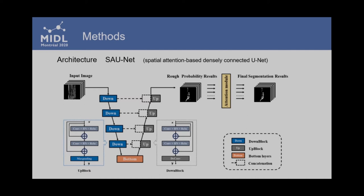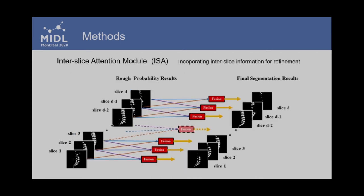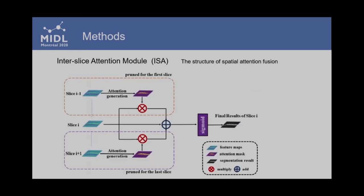After the 2D networks, we used an inter-slice attention module for the refinement of the segmentation results. For each slice, its adjacent slices are incorporated for the refinement, and the feature maps are utilized using 1x1 convolution and sigmoid to generate the attention masks, and then the masks are fused with the feature maps of the slice at hand.